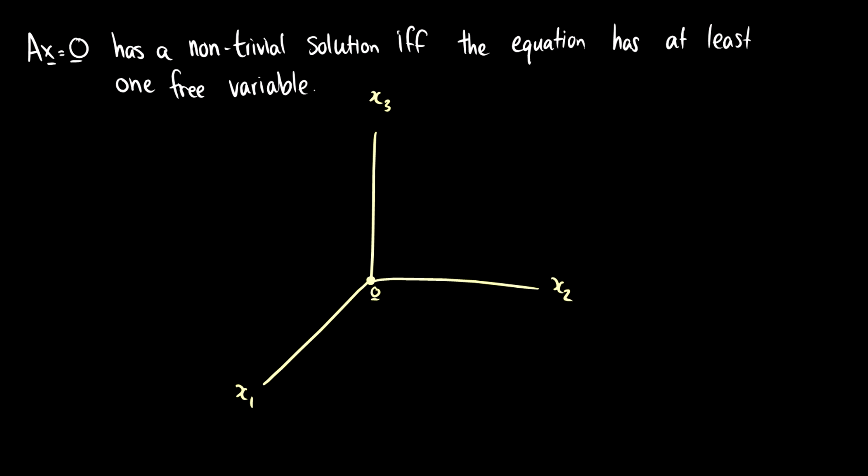So what does this look like? Well, what it can look like in this case is a line through the origin. So we can say that x1 is fixed and x3 and x2 change, or perhaps it is even a plane that passes through the origin. So in this case we have a free variable probably on the x3 axis that changes the height of it or the depth of it. So as long as there's one free variable we will get a non-trivial solution.